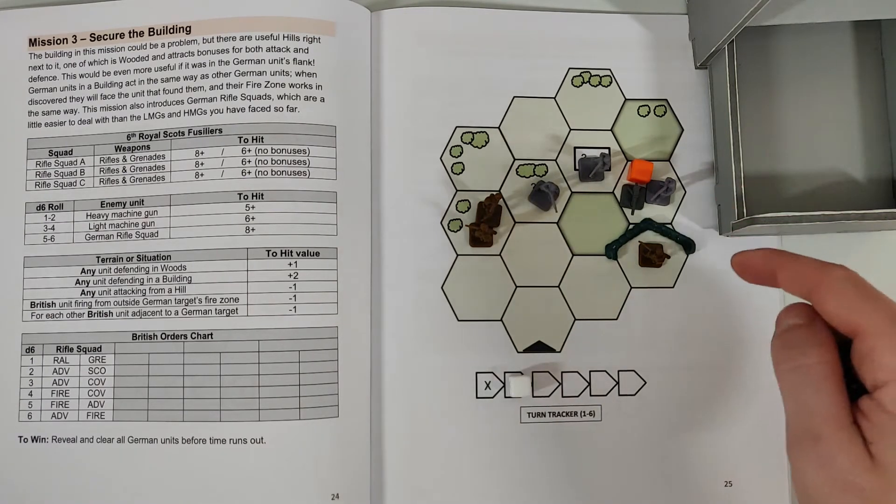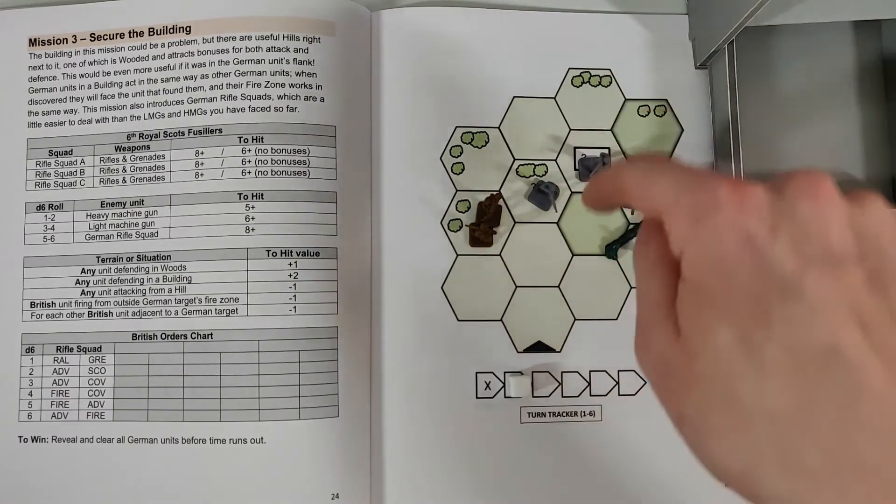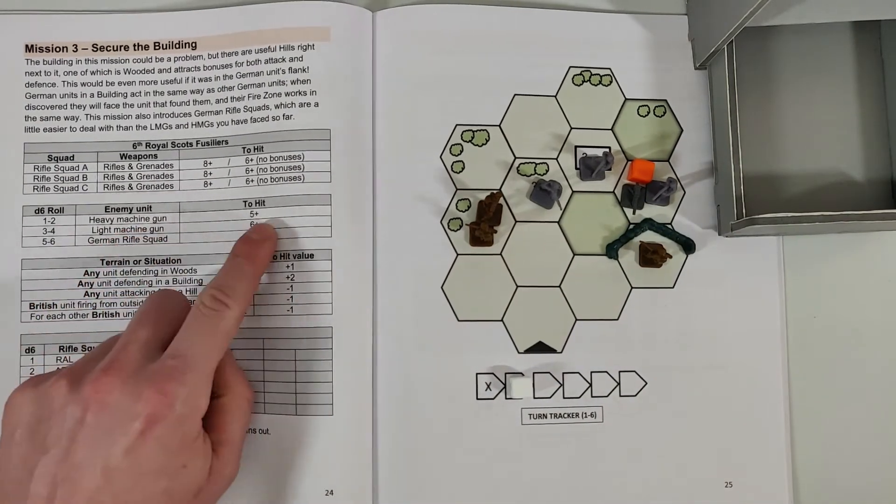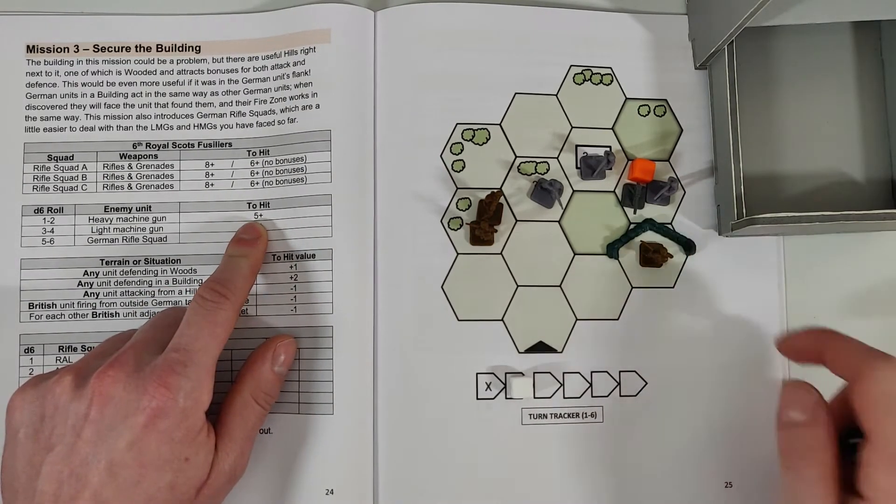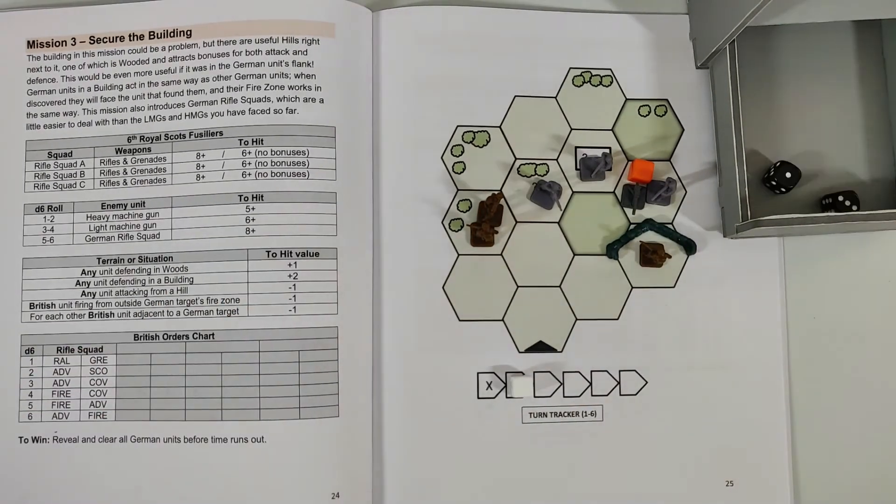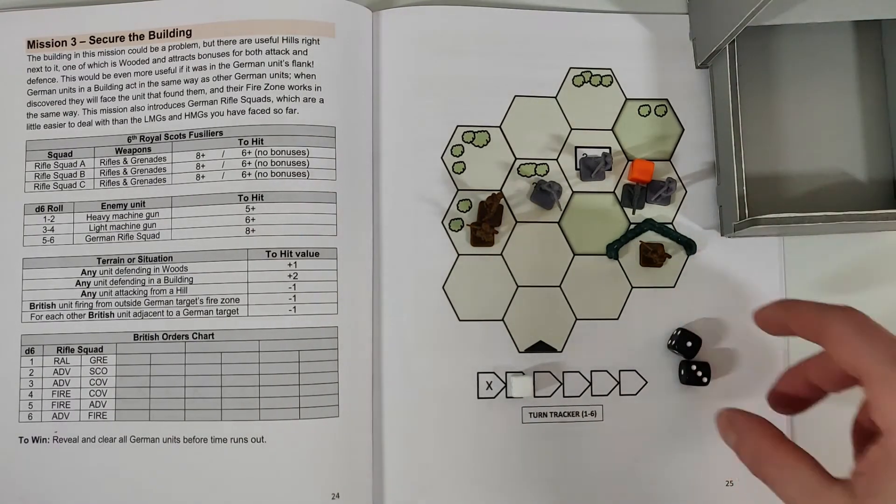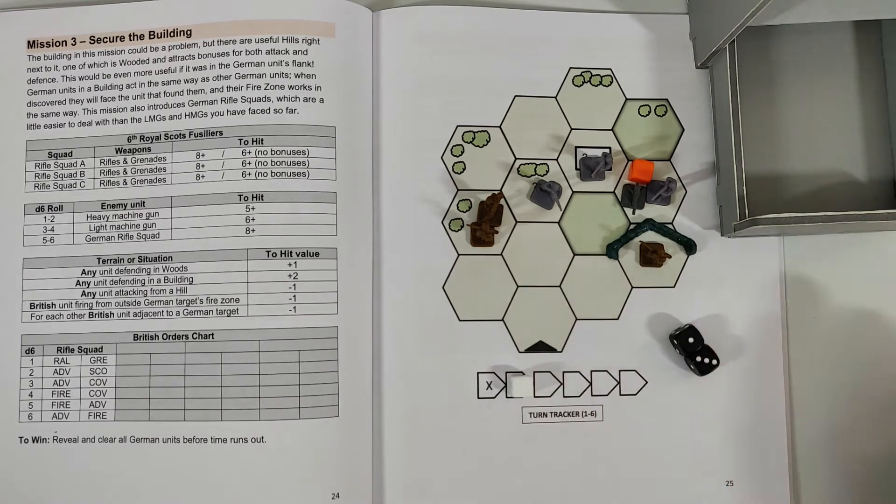So this time, now that we finished our turn, this time the Germans are gonna fire at us, since this guy is within range. Remember, this guy's fire arc is here, so even if he's in range, he cannot fire at my units which are flanking him. Alright, so the German will hit on five or higher. However, I have cover, so he will need to roll a six or higher. And let's see, the German only rolls four, so it was very lucky for my rifle squadron A - he has survived the attack.